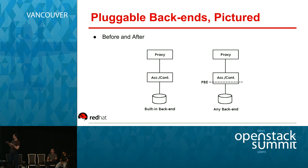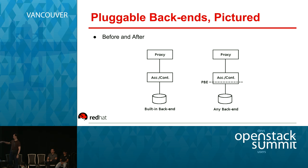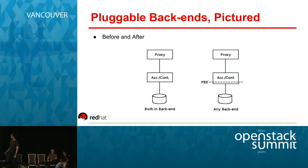The lower the interface sits, the more stable it becomes, because it changes with the technology rather than with user requirements. One observation people made is that because this sits on the other side of the network hop from the proxy, every request using this interface incurs a network hop — which is probably not ideal. But fortunately, two clever contributors came up with a way to address that, and Prashanth will talk about it.